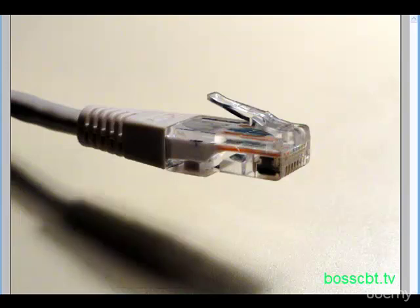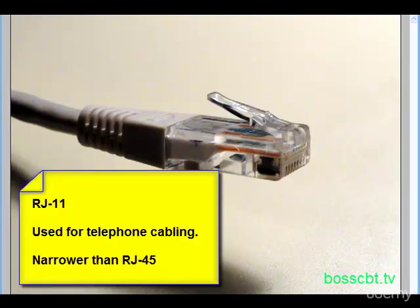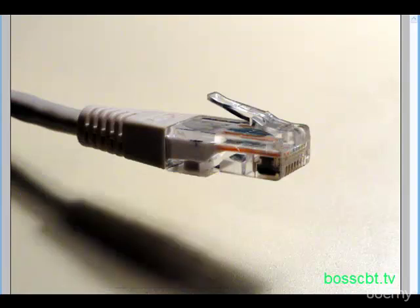The RJ-45 is similar to an RJ-11, which is used for the connector of a standard telephone wire. The difference is it's a little bit narrower. Let's move on to how data is actually transmitted on a UTP cable.